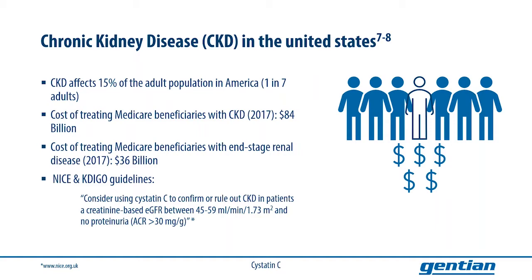The high cost of treating end-stage renal disease suggests that slowing CKD progression and developing targeted approaches to disease management should be a priority for health systems. CYSTATIN-C could ensure that these priorities are met by enabling an unbiased assessment of renal function, which is really central to the diagnosis and management of kidney disease.